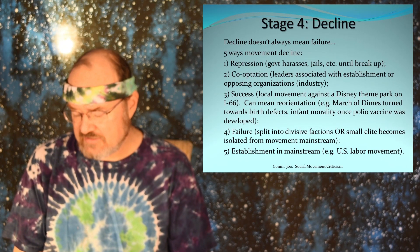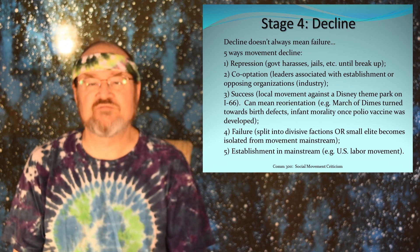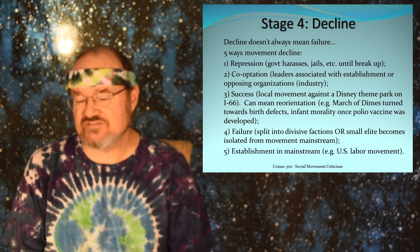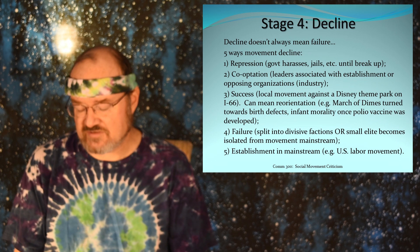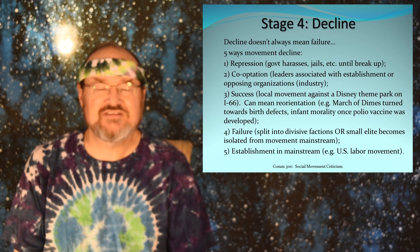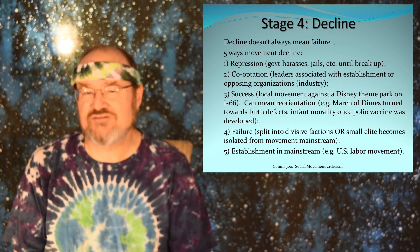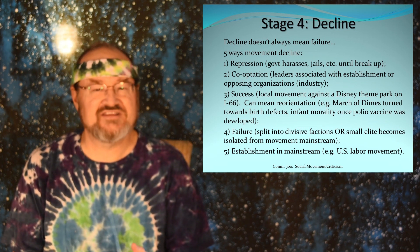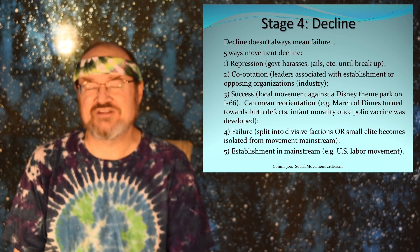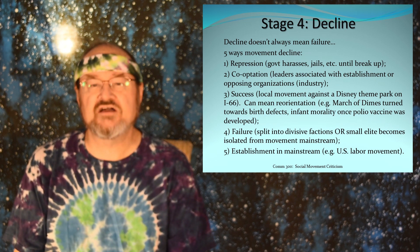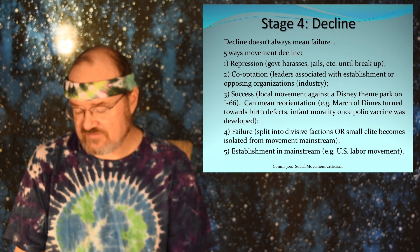Finally, there is decline. There are a number of ways that social movements decline. One is repression — the government harasses and jails members until the movement breaks up. You could say the Black Panther movement was the victim of governmental repression. The second is co-optation, where industry buys off the movement — some leaders get put on boards of organizations or companies and get co-opted into the system, no longer really fighting for their cause. That's a decline.